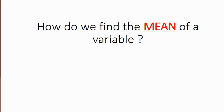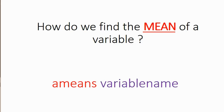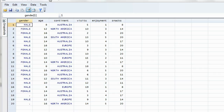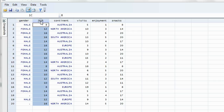First of all, how do we find the mean of any variable in Stata? There's a command called ameans, and all you have to do is type in these letters, then a space, then the name of the variable, and after you hit enter, you will get the mean of that variable. For example, if we open our data set, we can see that age is a continuous variable, so maybe we would like to have the mean age in this data set.